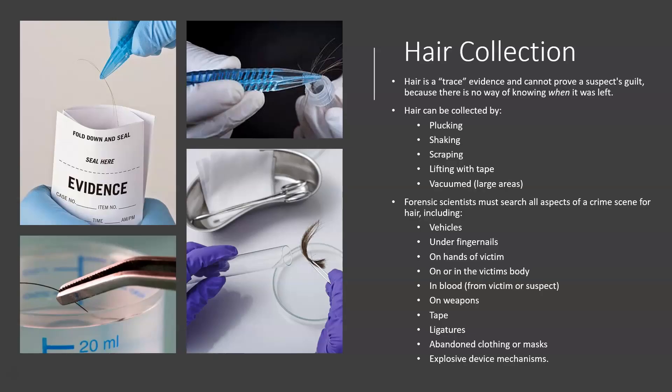So it should be pretty short, but to get started you obviously can't do a chemical test on a piece of hair or on a hair sample until you have a collection of hair or a sample taken from an individual. Hair is a piece of trace evidence. It cannot prove a suspect's guilt because there's no way of knowing when it was left, since there is a particular phase of hair development in which a lot of hairs can be shed. Shedding is a normal part of mammalian biochemistry, and so hair is a piece of trace evidence because there's no way of proving when it was actually left or deposited.